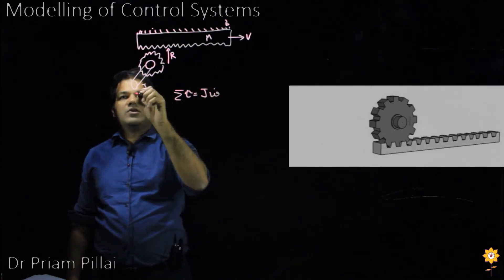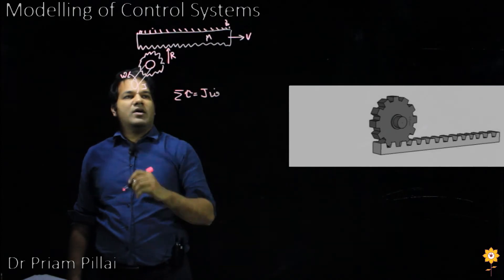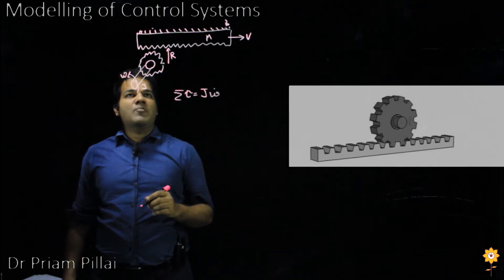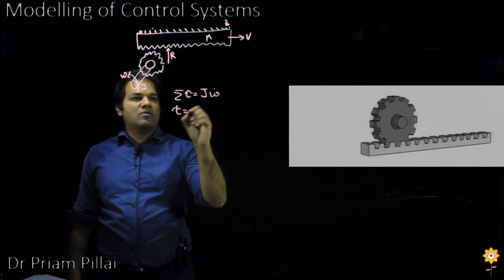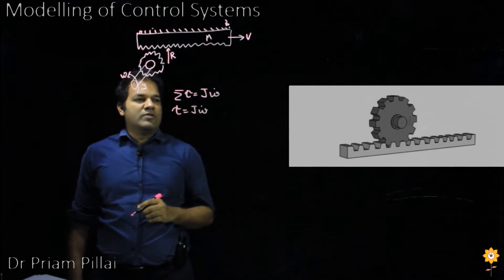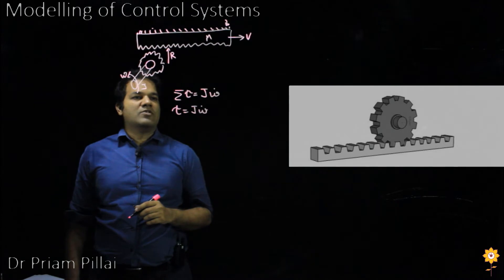Where omega is the angular velocity of the shaft. There's only one input torque, so that equation will simply be tau equals J omega dot.